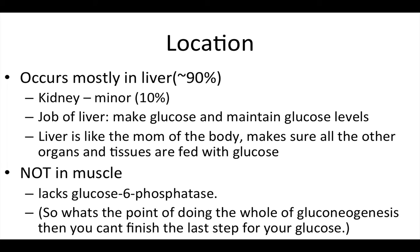The job of the liver is to make glucose and maintain blood glucose levels. I like to think about the liver as the mom of the body, because the liver makes sure all the other organs and tissues are fed with glucose. Also make sure you know that gluconeogenesis does not occur in the muscle, and the main reason is because it lacks the very last enzyme in the process, which is called glucose-6-phosphatase — an important enzyme you should know about.